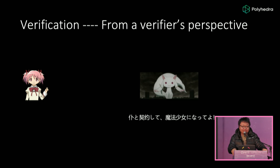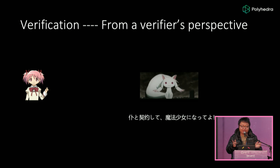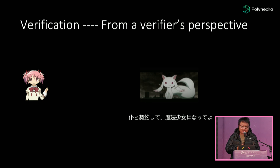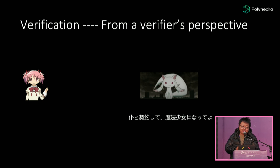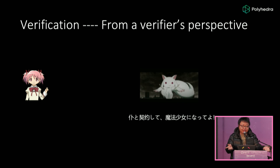It happens in the ZKP world. You don't actually know what the prover is going to claim. The prover is just saying random things. For example, the prover claims that his circuit is a KZK hash circuit, or the prover claims that his circuit is a SHA-256 circuit. But who knows? He may make false claims.